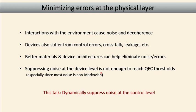A lot of this can be dealt with at the device level by using better materials, better architectures, and things like that to try to eliminate the noise at its source. But suppressing the noise entirely at the device level is not going to be enough to reach quantum error correction thresholds. We need to use controls which are smart, know something about the noise in the device, and design them to dynamically suppress these effects.